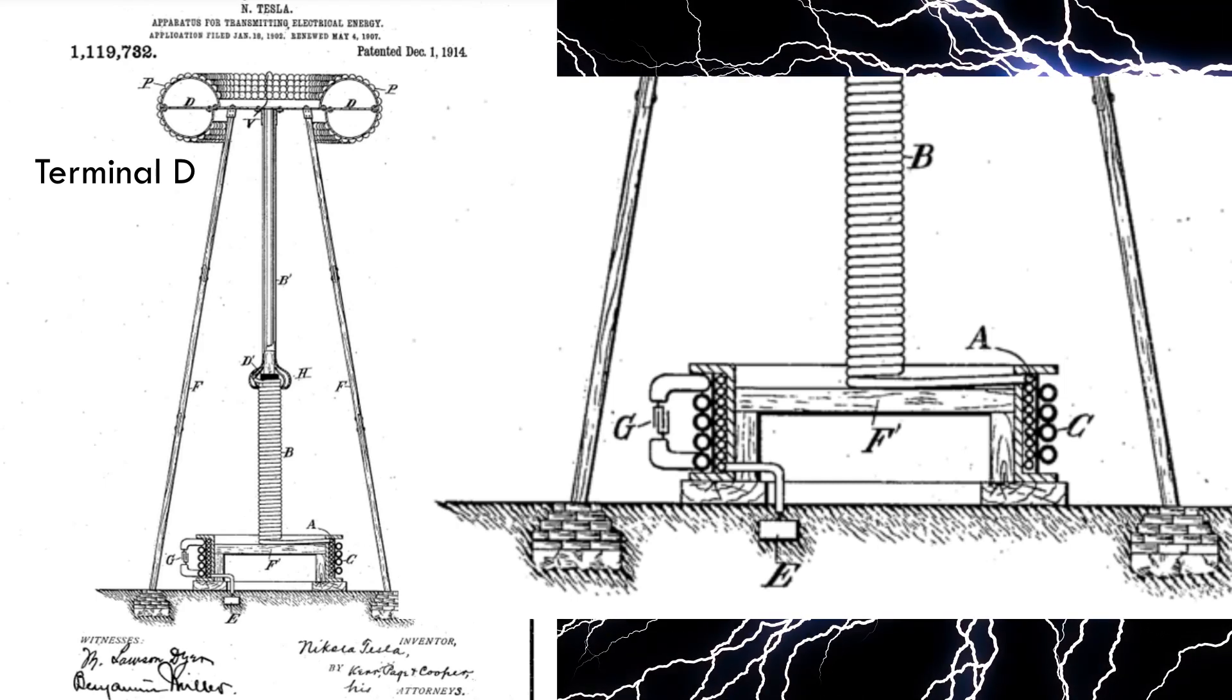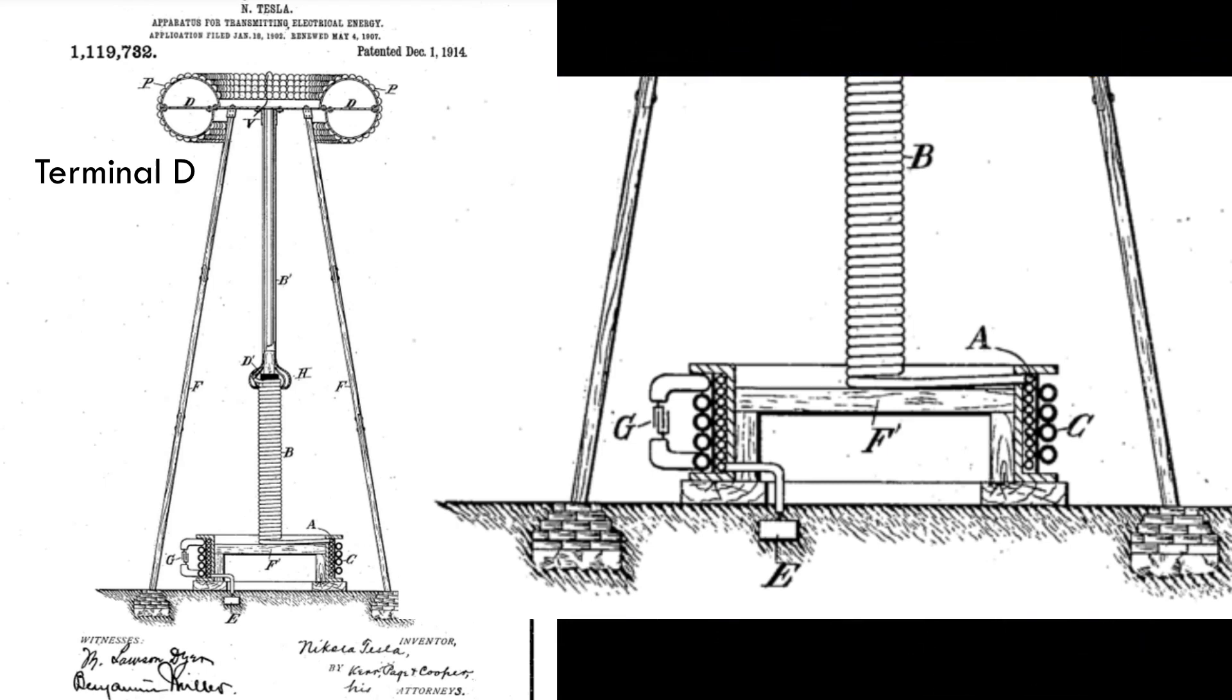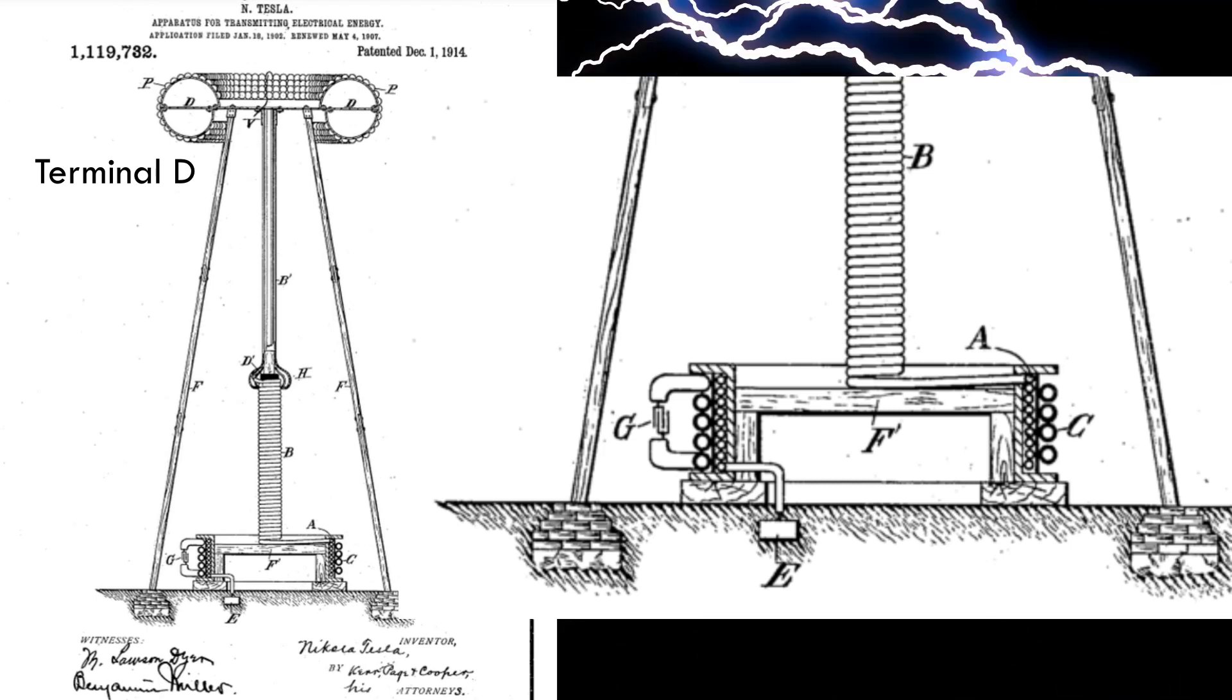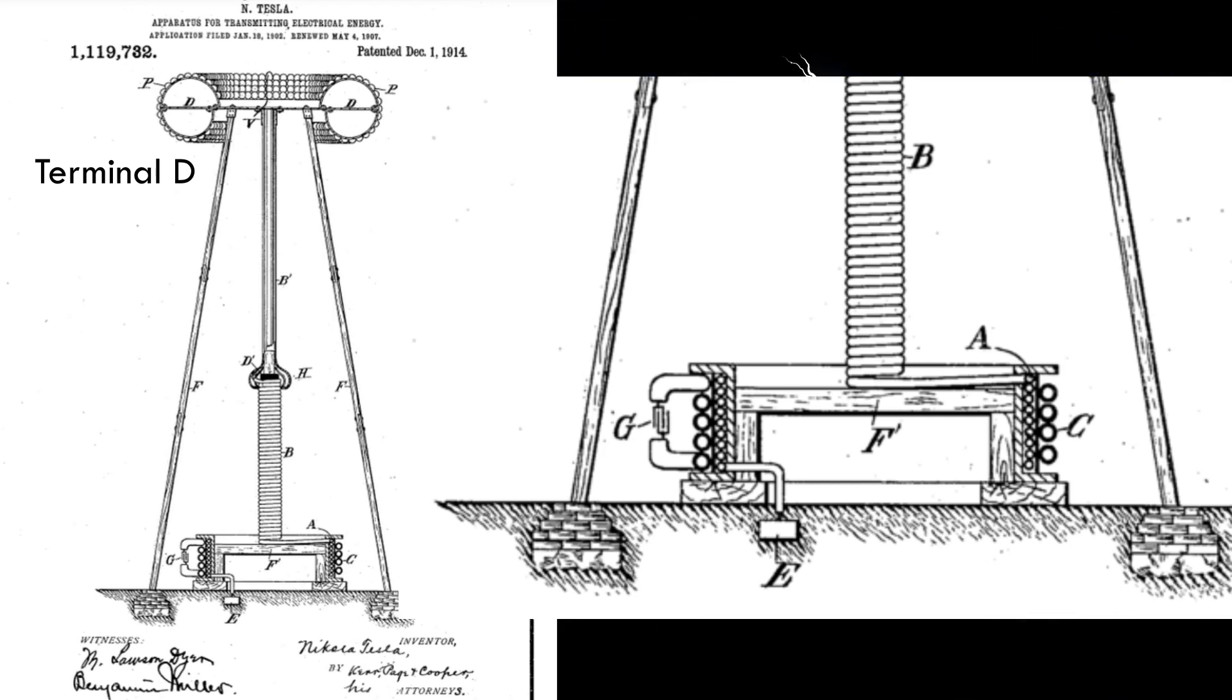8. A wireless transmitter, comprising in combination a source of oscillations as a condenser, a primary exciting circuit, and a secondary grounded and elevated conductor, the outer conducting boundaries of which, are in proximity to each other, and arranged in surfaces of large radii of curvature, substantially as described.